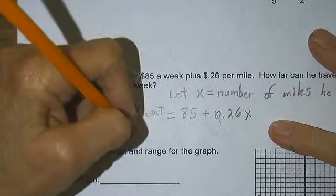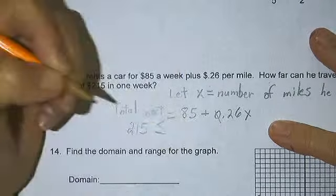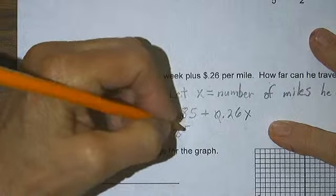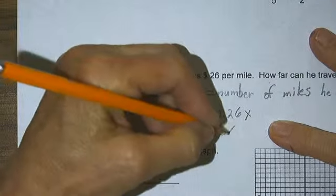So $215 has to be greater than or equal to $85 plus $0.26 times x.